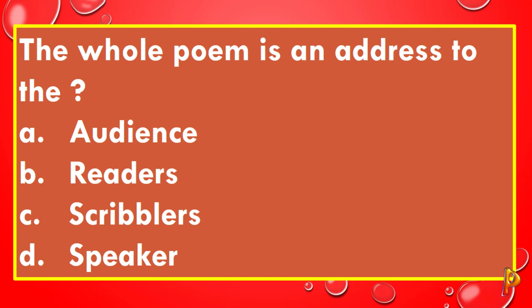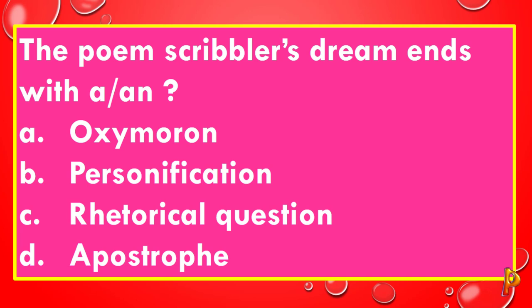The poem Scribbler's Dream ends with: A: Oxymoron. B: Personification. C: Rhetorical question. D: Apostrophe. The correct answer to this question is C, rhetorical question.